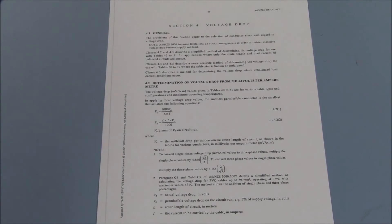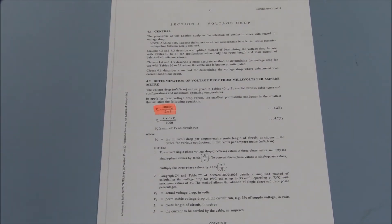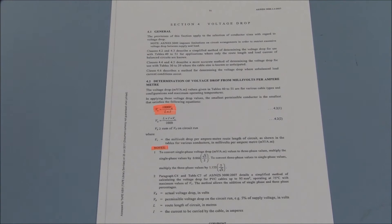The voltage drop equations are listed in Section 4 of AS3008. As we are searching for the value of VC, we'll use VC equals VD multiplied by 1000, all divided by length multiplied by current. However, be aware there is a note that relates to single phase situations.